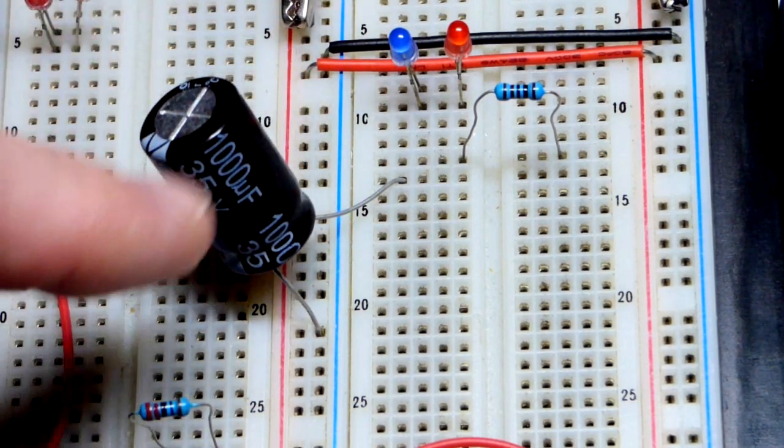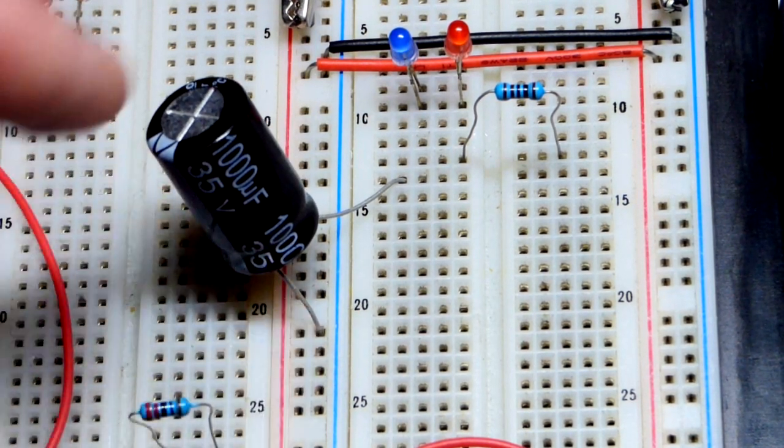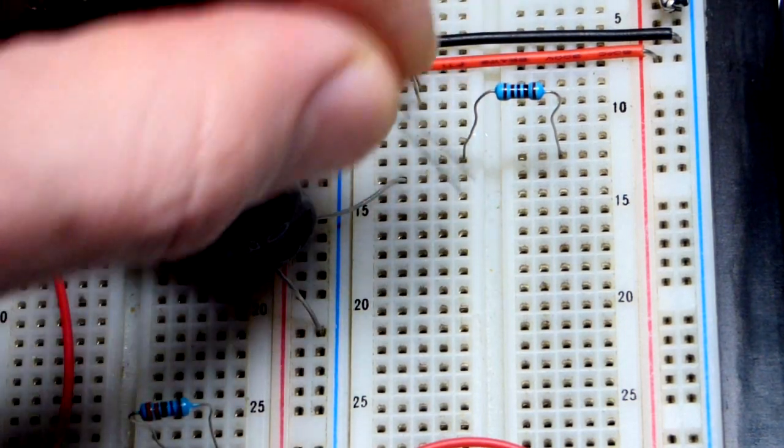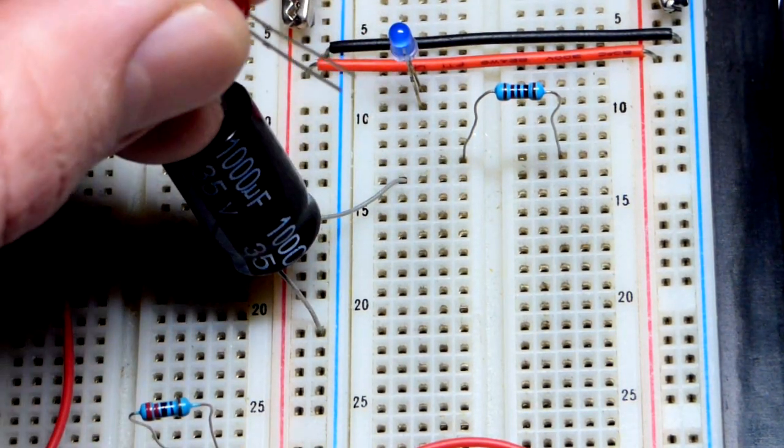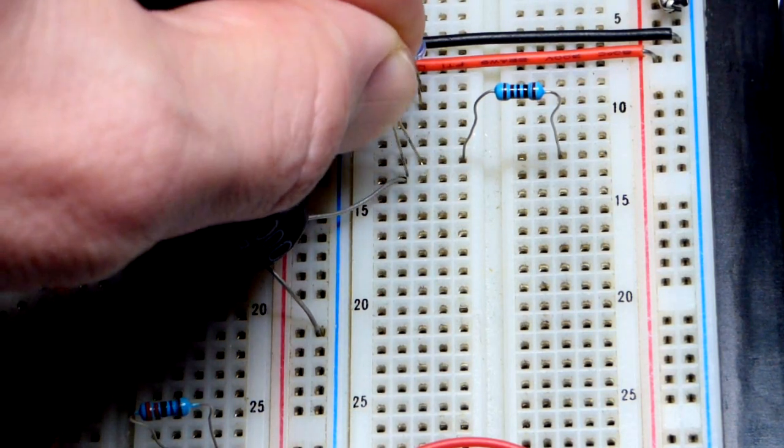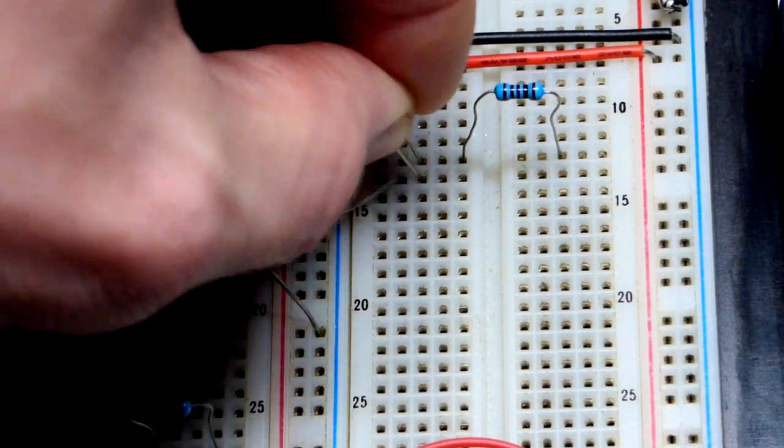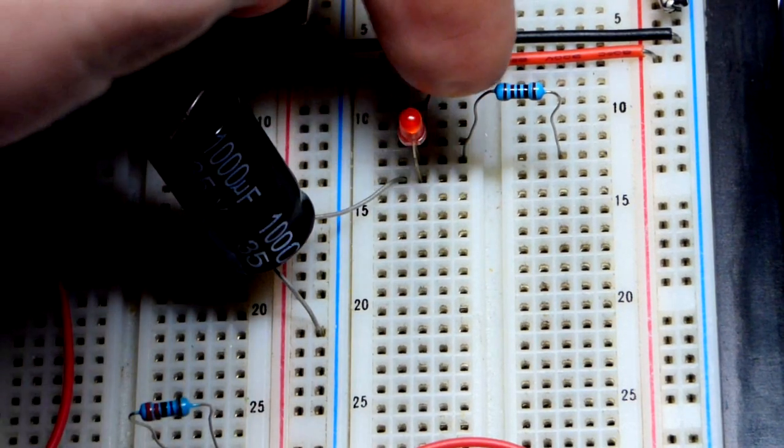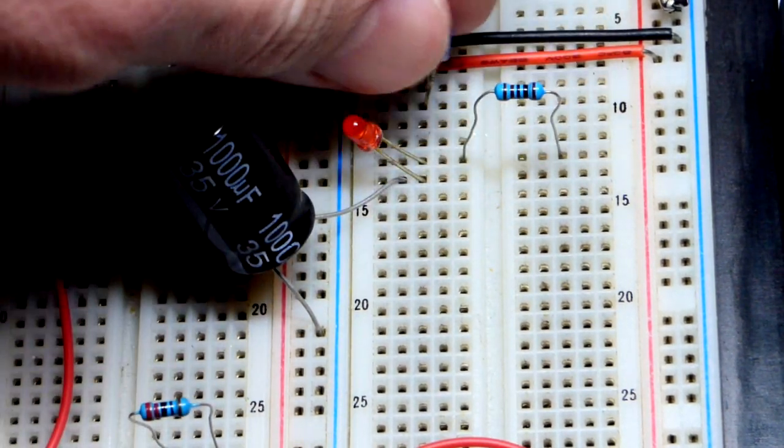So we've got a 1000 microfarad capacitor. That side has to be more negative, we're putting it to the negative rail. We want the red LED to light up when the capacitor is on the more negative side of the circuit. So we're going to put the short lead, the cathode, to the capacitor, the long lead, the anode, to this 1000 ohm resistor, because we're going to use 12 volts.